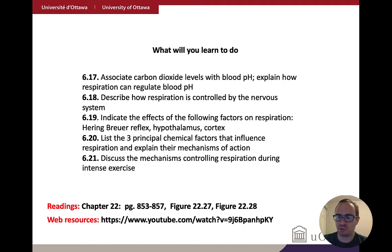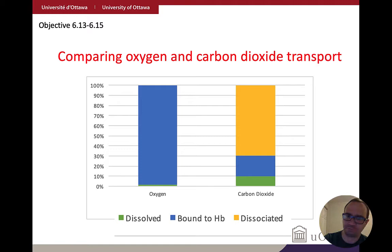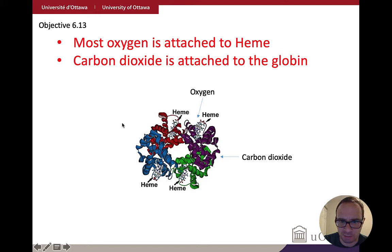As usual, we'll start with a little review. Last time we talked about how oxygen and carbon dioxide are transported in the blood. Most oxygen is bound to hemoglobin, with a little dissolved. You also have some dissolved carbon dioxide — more than for oxygen. Some carbon dioxide can interact with hemoglobin as well, but most is in its dissociated form as the bicarbonate ion. Oxygen interacts with iron-bound heme, while carbon dioxide interacts with the protein part — the amino acids of the heme tetramer, meaning four subunits.